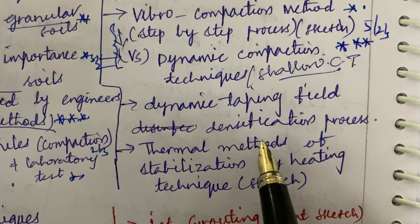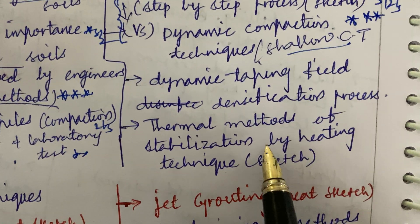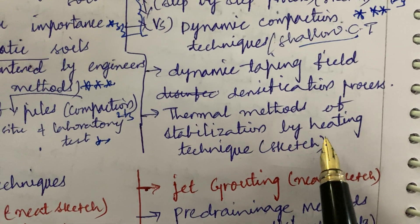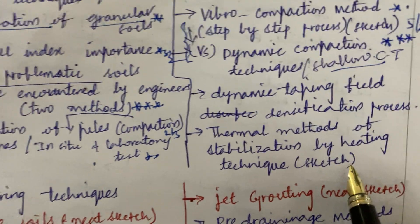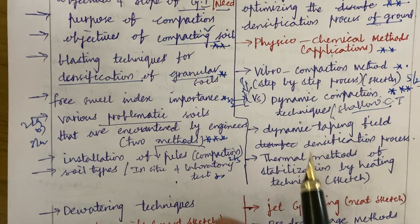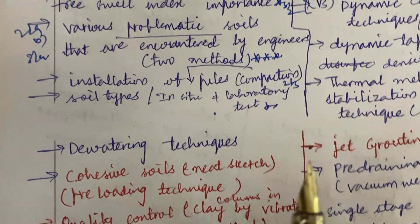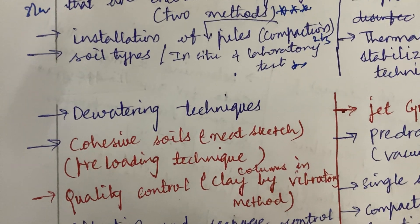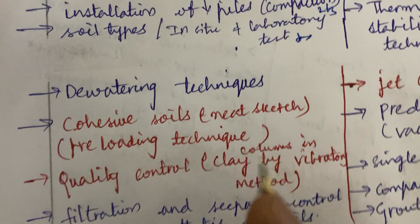You will get at least a 5 mark or 2 to 3 mark question from this part for sure. Dynamic taping field, densification process, and thermal methods of stabilization by heating technique sketches are also important. Dear students, I have gathered all the questions together unit-wise as per the syllabus. Please do follow and work out all these questions.